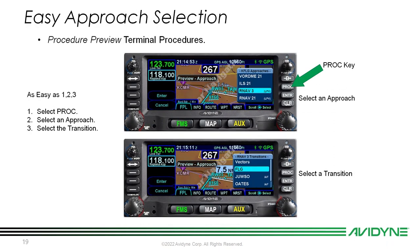Approach selection is just as simple. While in your flight plan page, hit the procedure key and you get a list of available approaches for your destination. Select an approach and then select a transition to filter it further. For example, flying into FLG and selecting the RNAV 3, it asks for JUSO or OATS as your fix. Select it and it's automatically entered into the flight plan.